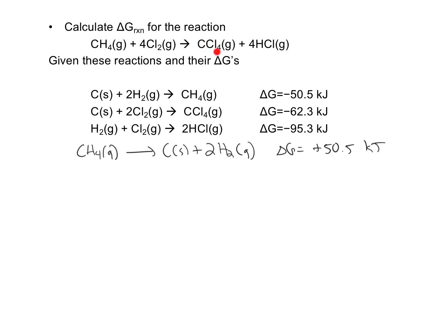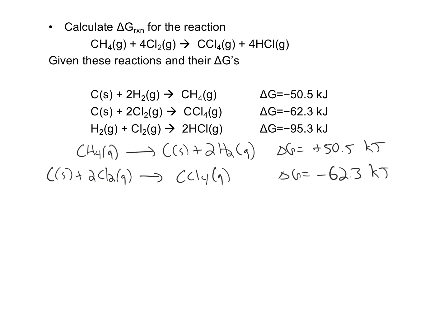I want to find one mole of CCl4 on the product side. When I look at all the given reactions, this is the only one that has CCl4. I'm in good shape: I want one mole, I have one mole, and I want it on the product side — it's already on the product side. So I can use this reaction unchanged, and since I'm not changing the reaction, I won't change the delta G. Rewriting it: carbon solid plus 2 Cl2 gas goes to one mole of CCl4 gas, with delta G equal to negative 62.3 kilojoules.